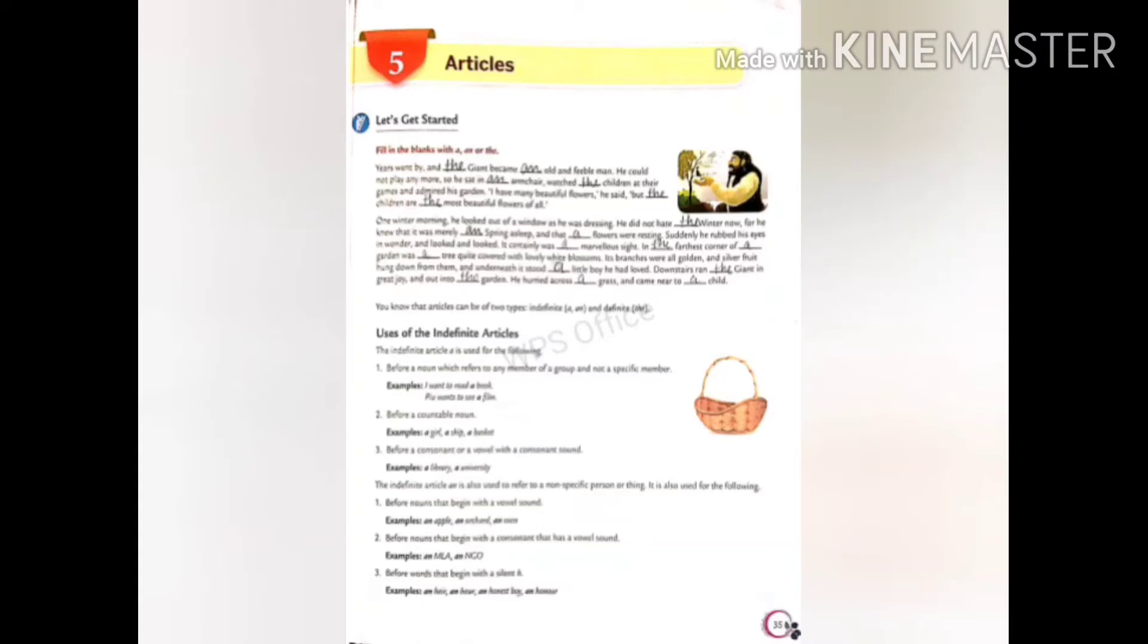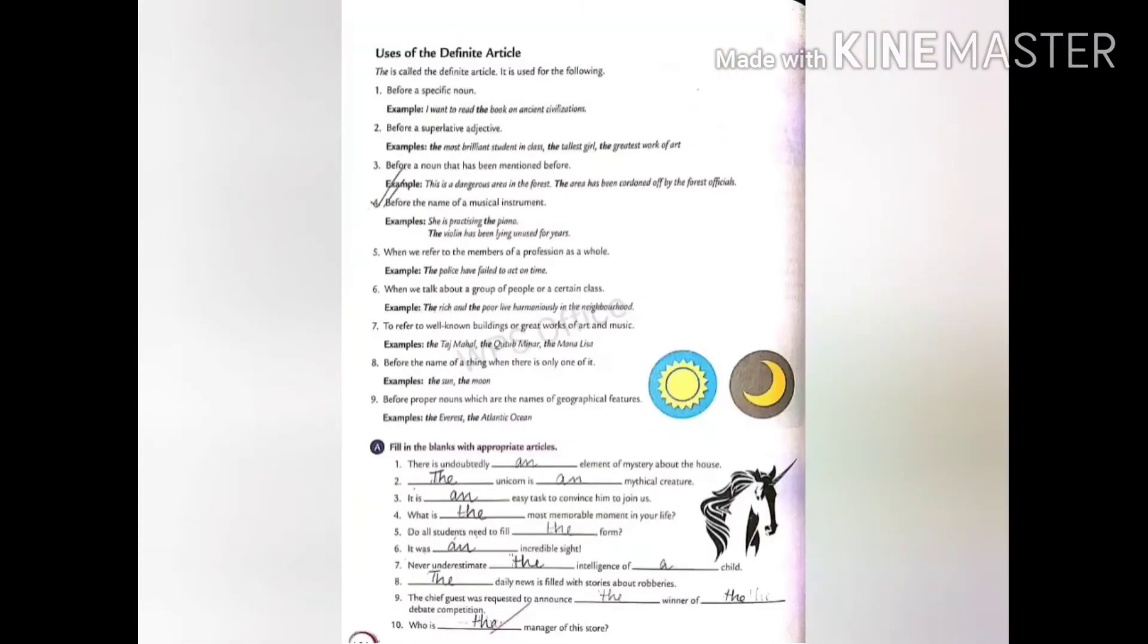I want to eat an apple. Here, apple is giving you a vowel sound. That's why we are putting the indefinite article an here. Let's move further and move to the definite article that is the.